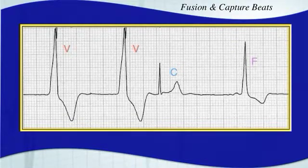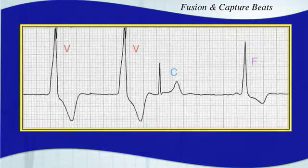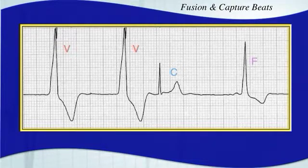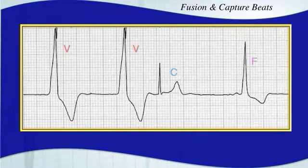In fact, if you see AV nodal dissociation at all — if you just see P waves marching throughout but there's no association with the QRS complex — that's another good indication that you're dealing with a ventricular arrhythmia.